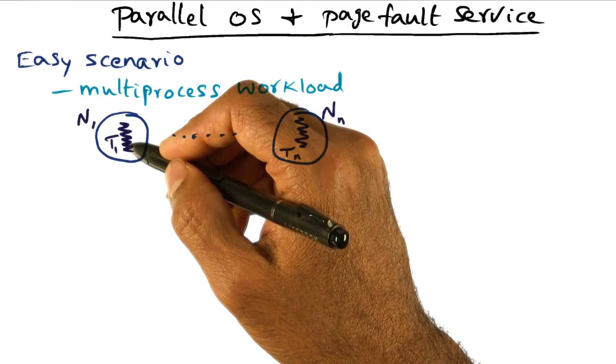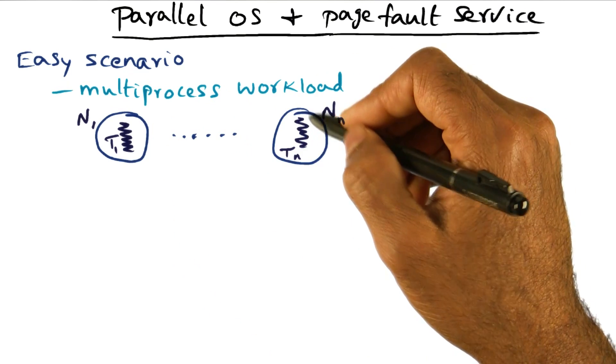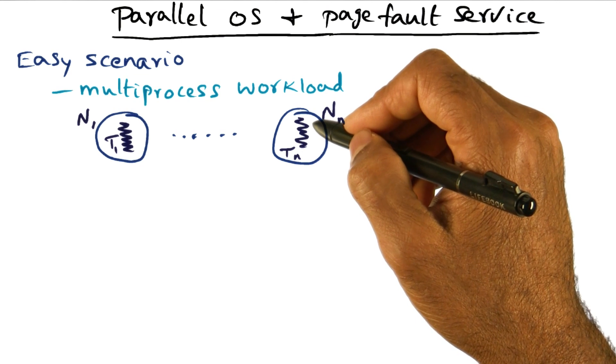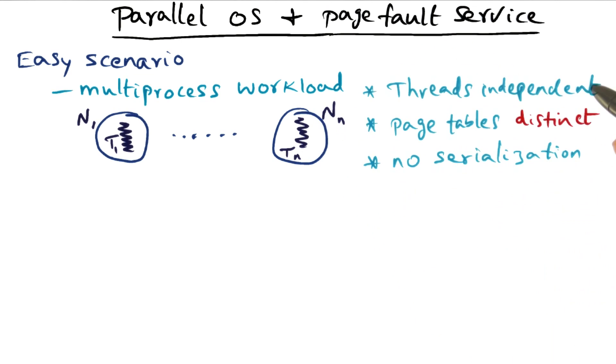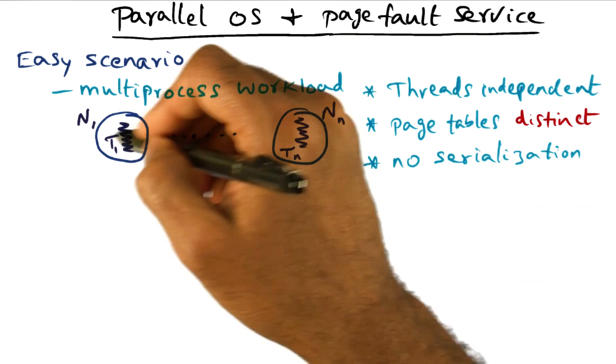If that is the case, if there's a page fault incurred on this node and simultaneously a page fault in another node, they can be handled completely independently. Why? Because the threads are independent, the page tables are distinct, and therefore you don't have to serialize the page fault service.